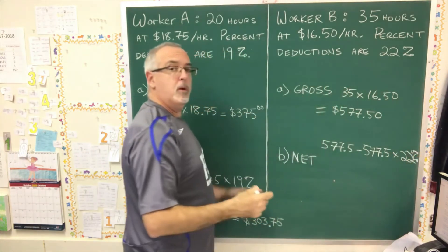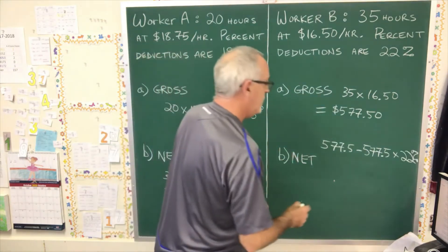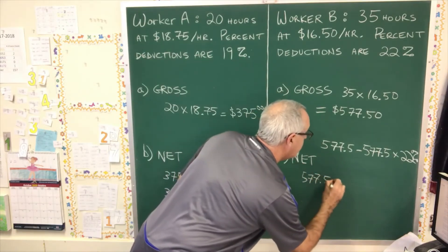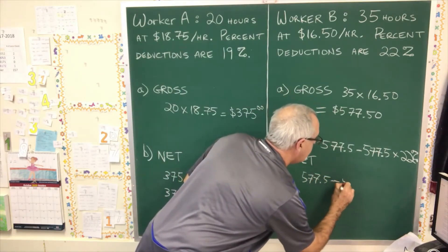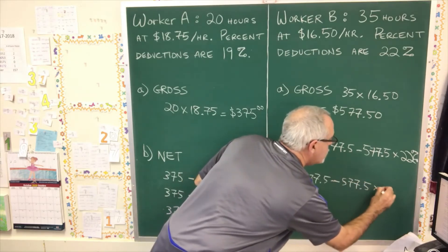But we don't want to use 22%. We want to use the decimal version of that number. We divide 22 by 100 and we get 0.22.